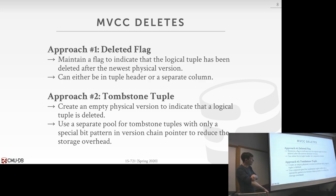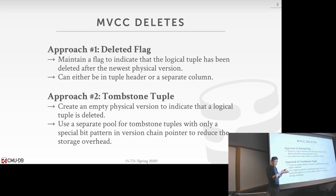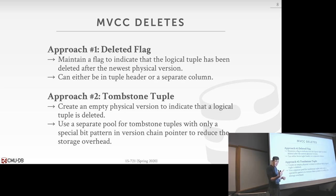In our system we store it as a separate bitmap column. The other approach is a tombstone tuple — a special physical version placed at the end of the version chain to indicate the tuple was deleted, along with timestamps to record when. To avoid wasting space in the fixed data pool with a thousand-column tombstone, you can have a separate pool just for tombstone tuples, since they don't store any attributes — they're just a marker that a tuple was deleted.